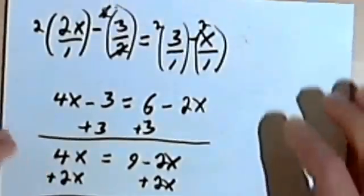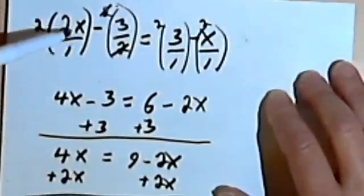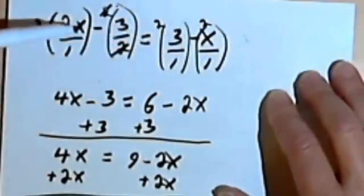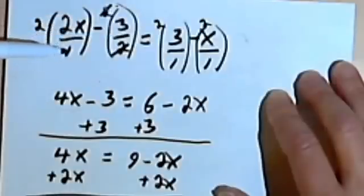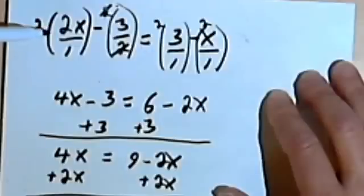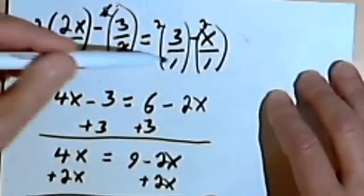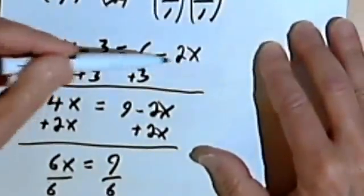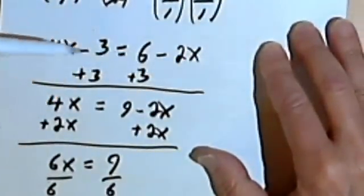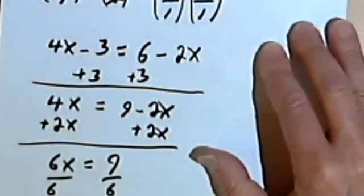So just to review this for a second, what I did was I took every term in my equation and I gave it a denominator. The denominator I gave it, if it didn't have one, was a 1. Then I multiplied everything by my common denominator. When you do that, you're going to get rid of all the denominators, which is what I have here. And now you're just solving this the way you've solved other equations.